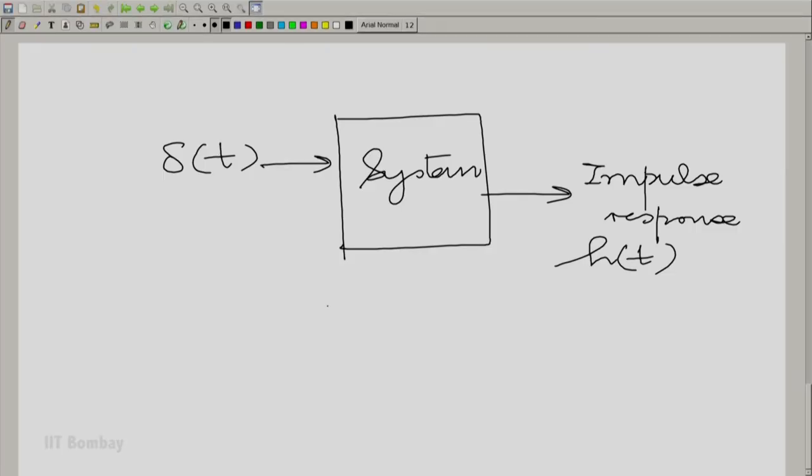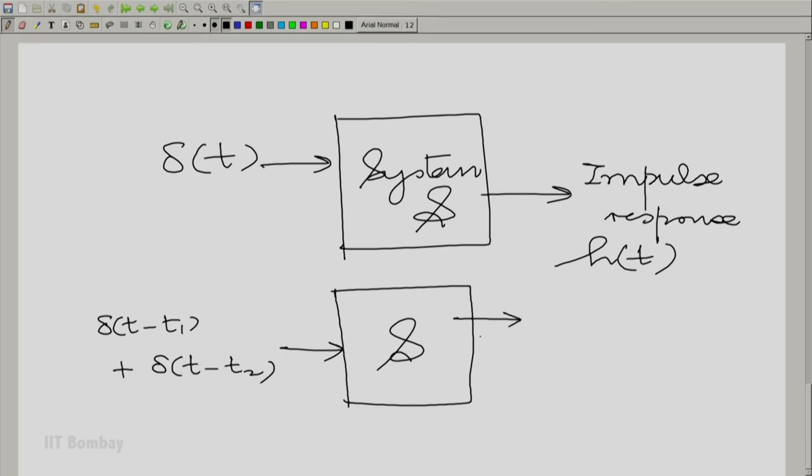Now let me apply all the three properties and see what it gives me. Let me take additivity first. So suppose I apply two impulses to the system. You have the same system S here and you give it two impulses. One located at say t1 and the other one located at t2. What is the output expected because of additivity? The output should be the response to whatever happens when you apply an impulse located at t1 plus the response to whatever happens when the impulse is located at t2. At the moment we cannot say much unless we use the other properties.